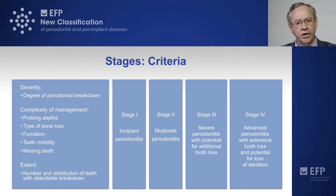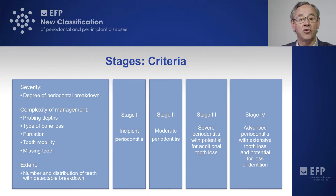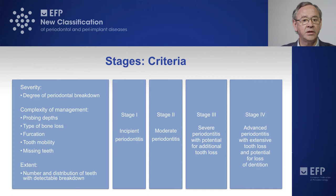Using these criteria, we have stages one and two, which we normally term as incipient and moderate periodontitis, and stages three and four. Stage three represents severe periodontitis with potential for tooth loss, while stage four represents severe periodontitis with extensive tooth loss and potential for losing the whole dentition.